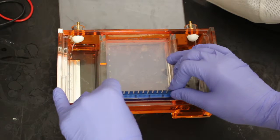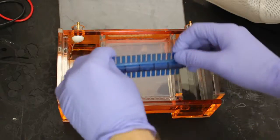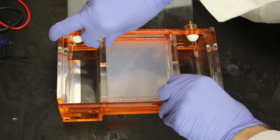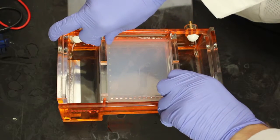Once the gel forms, carefully remove the well mold. Here, we remove the mold with the gel and place it in its proper orientation.